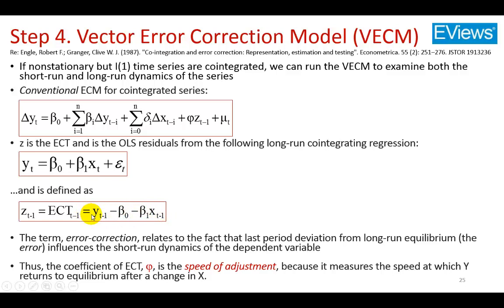This is called the co-integrating equation. The error correction term relates to the fact that last period's deviation from long-run equilibrium — that deviation being the error — influences the short-run dynamics of the dependent variable Y. Thus, the coefficient of the error correction term, which is phi, is considered the speed of adjustment because it measures the speed at which Y returns to equilibrium after a change has occurred in the explanatory variable.